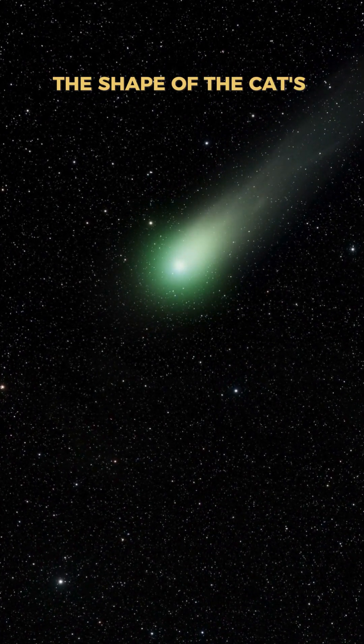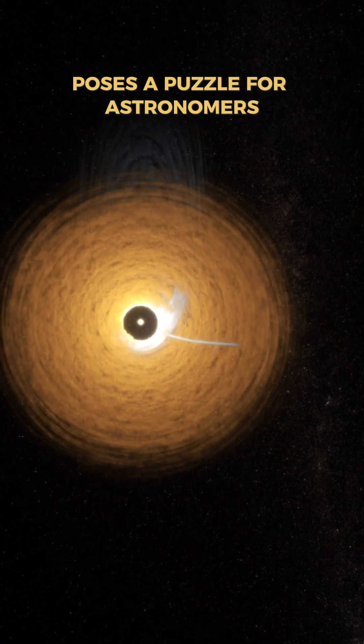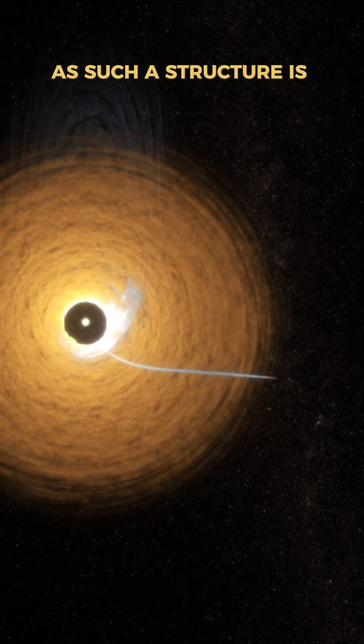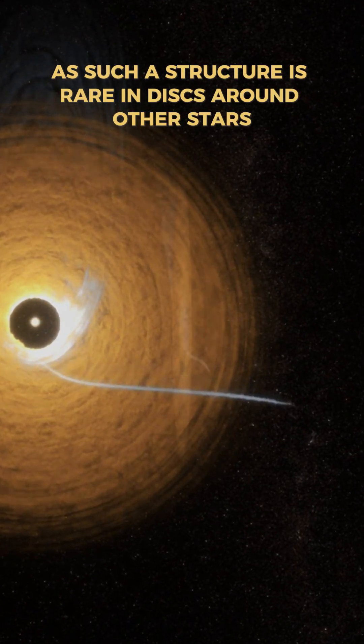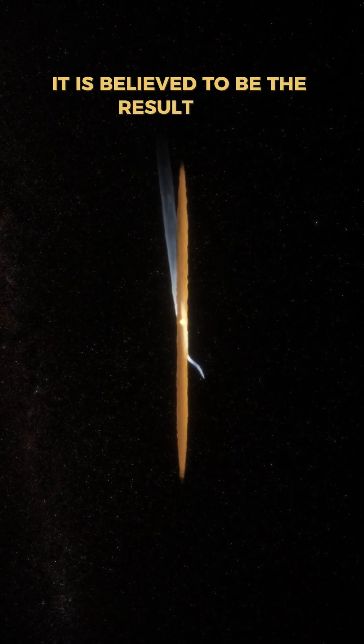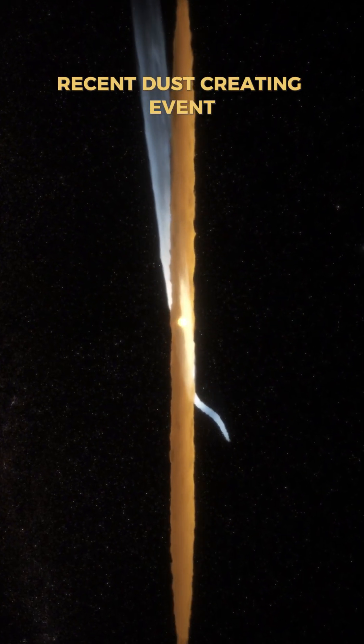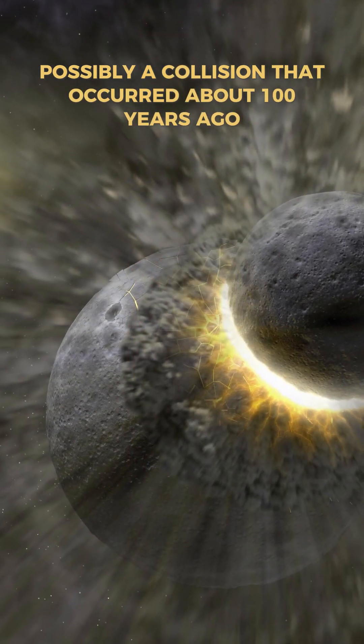The shape of the cat's tail poses a puzzle for astronomers, as such a structure is rare in disks around other stars. It is believed to be the result of a recent dust-creating event, possibly a collision that occurred about a hundred years ago.